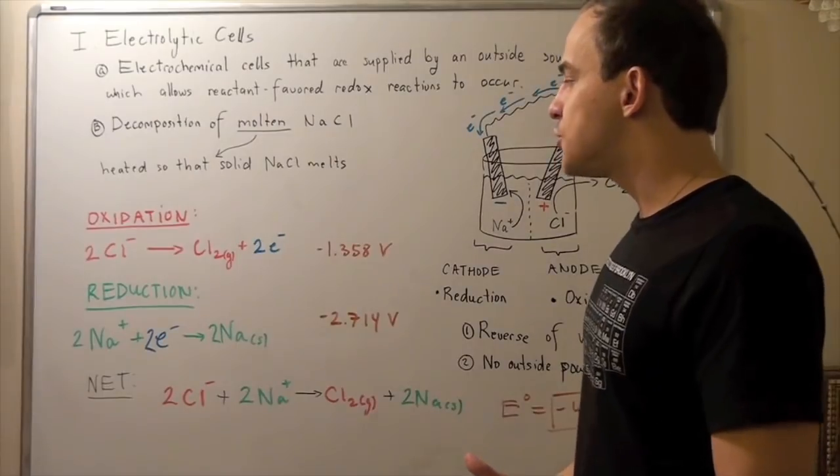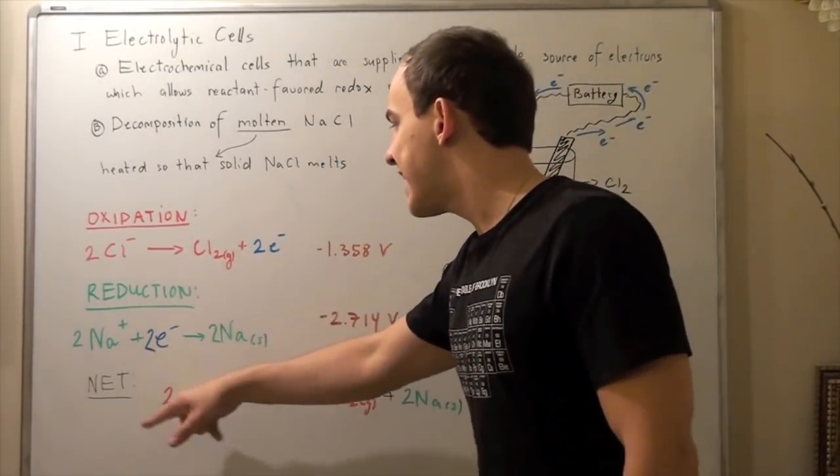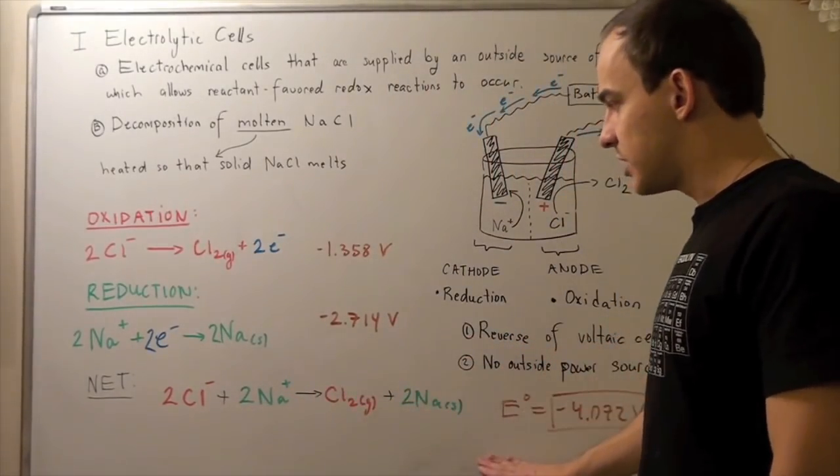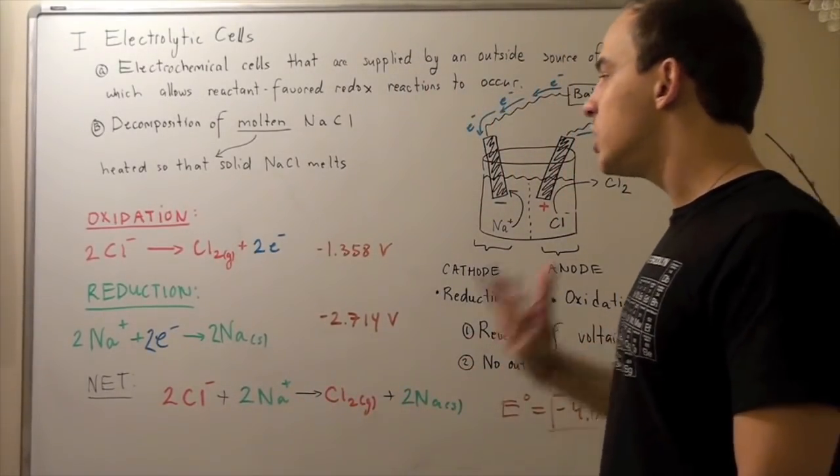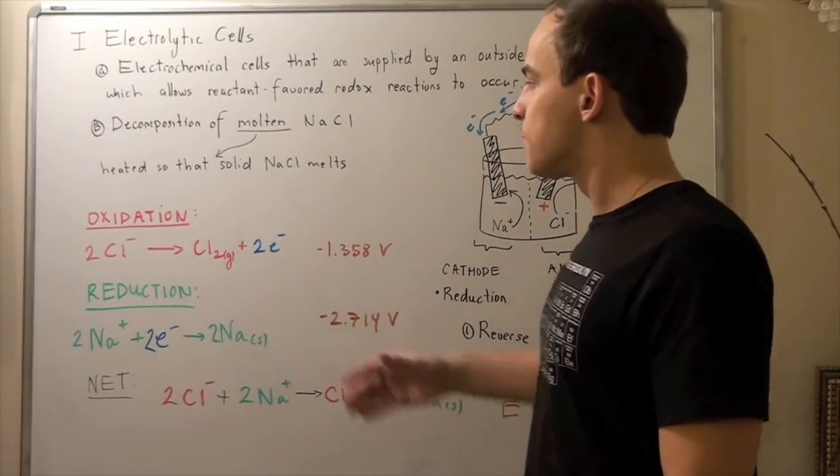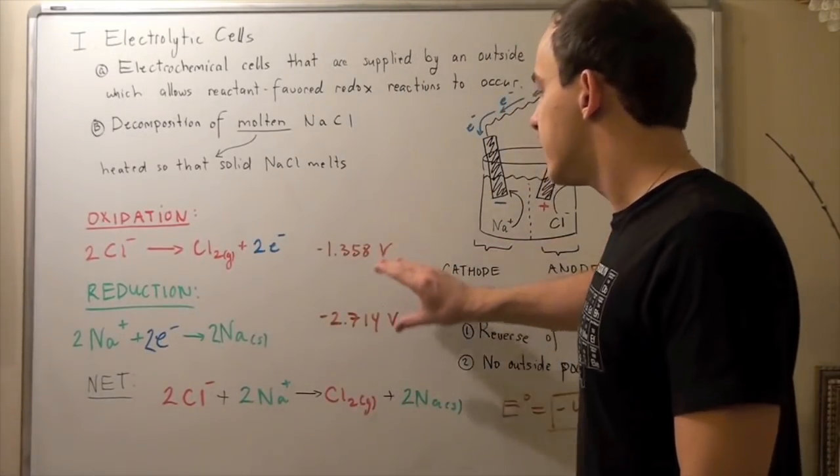Now, our net reaction is just the addition of this guy to this guy. Notice that electrons cancel, and we simply get the following net redox reaction. Now, if we were to look up the electron potentials, or the cell potentials, for this reaction, and this reaction, we would get the following voltages.